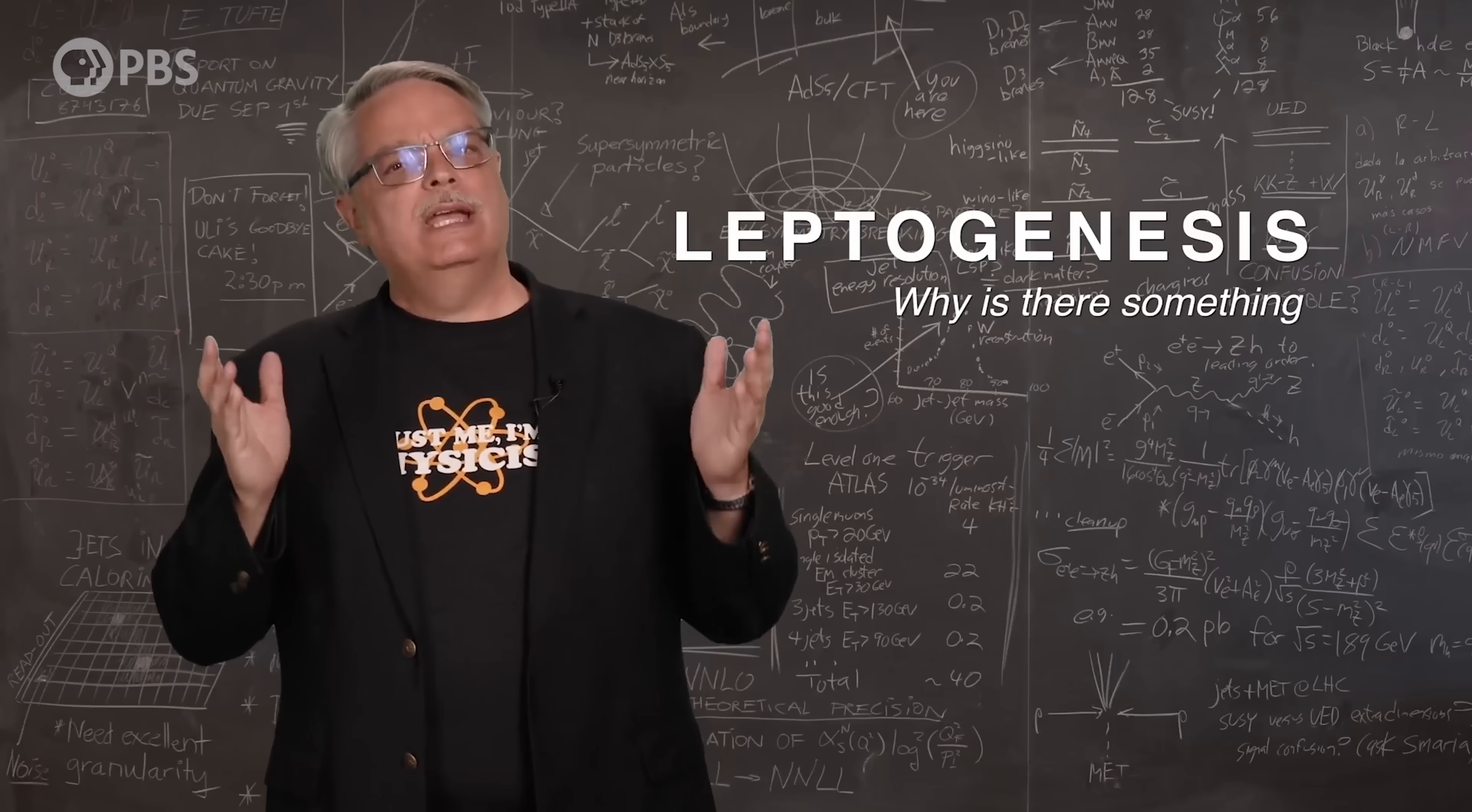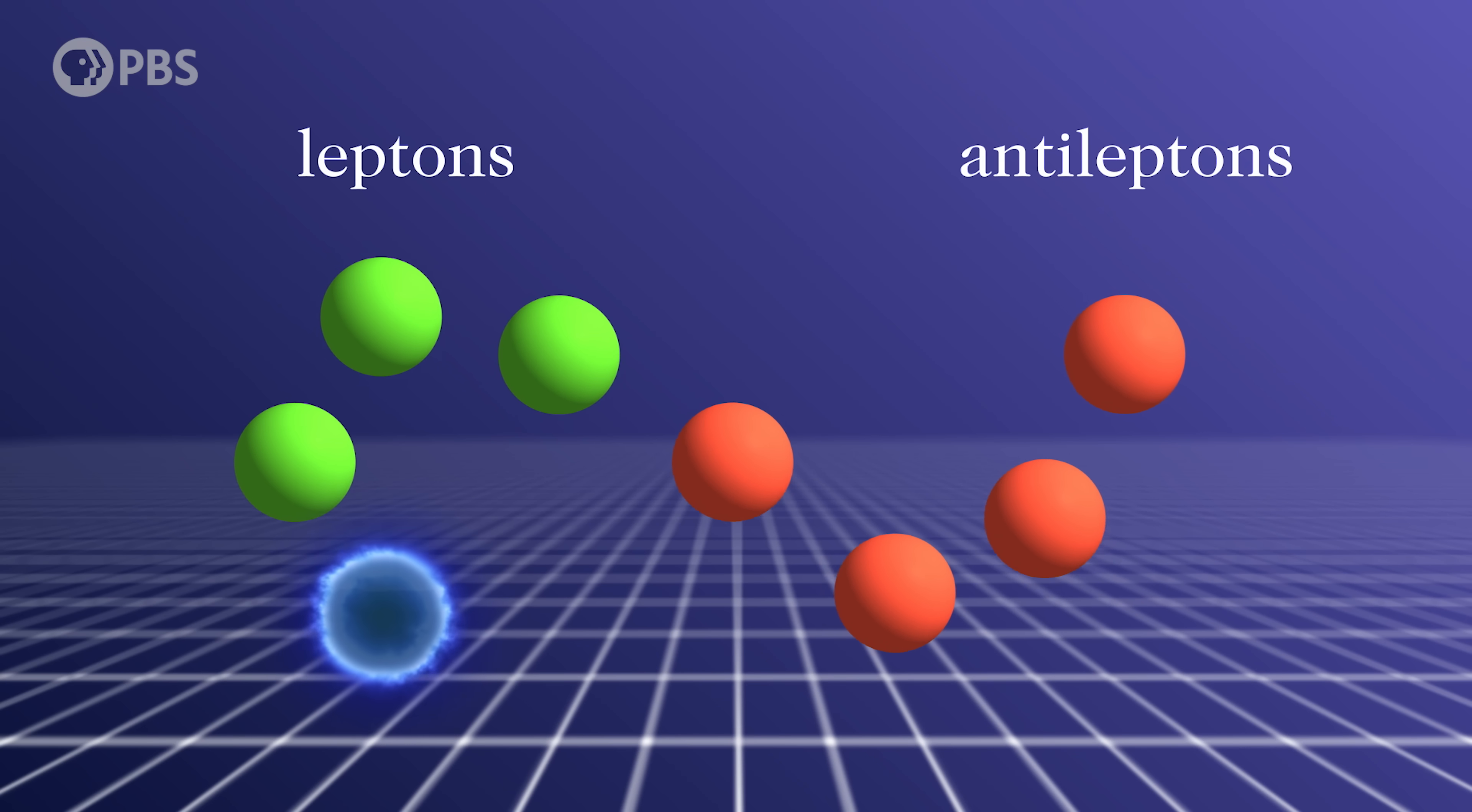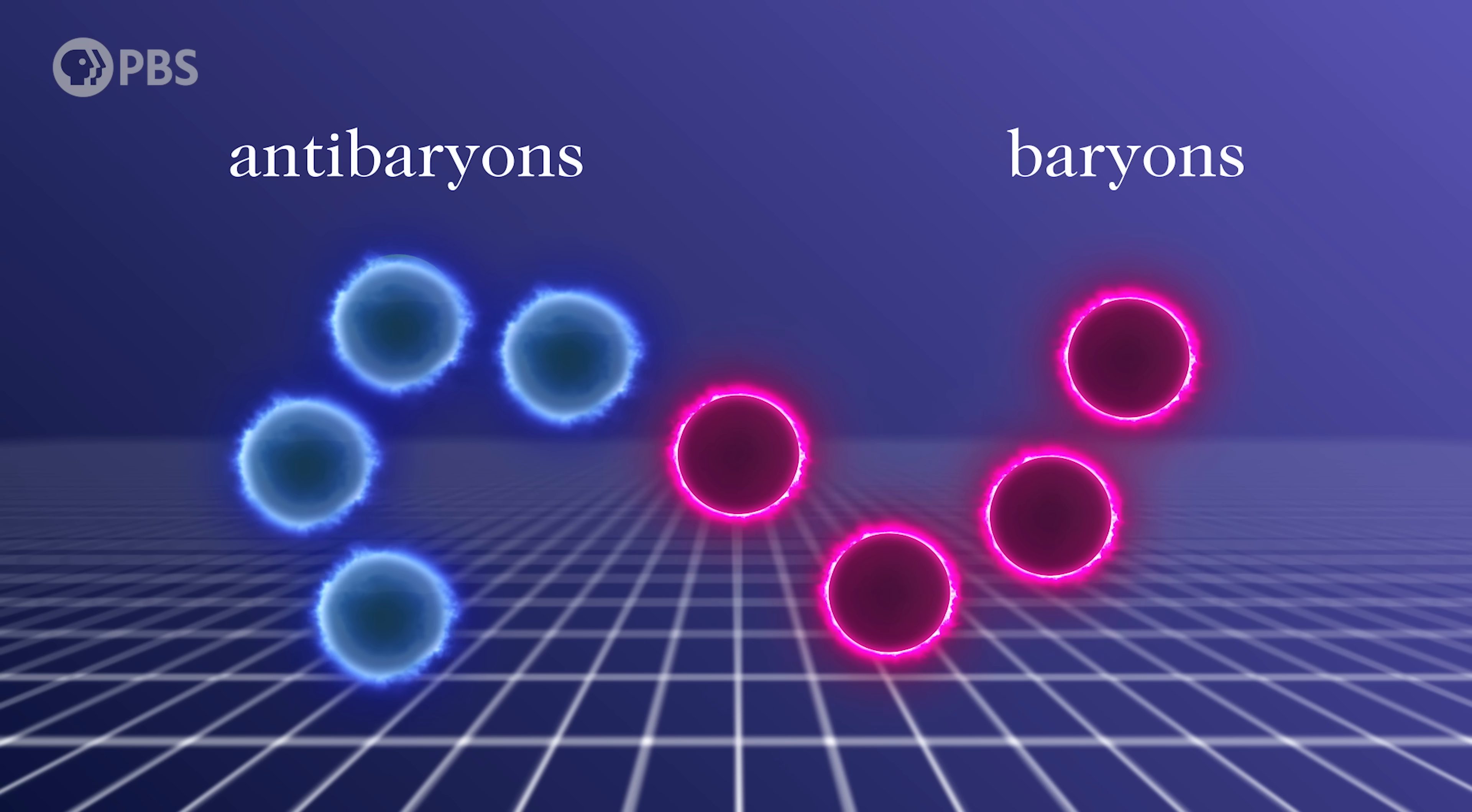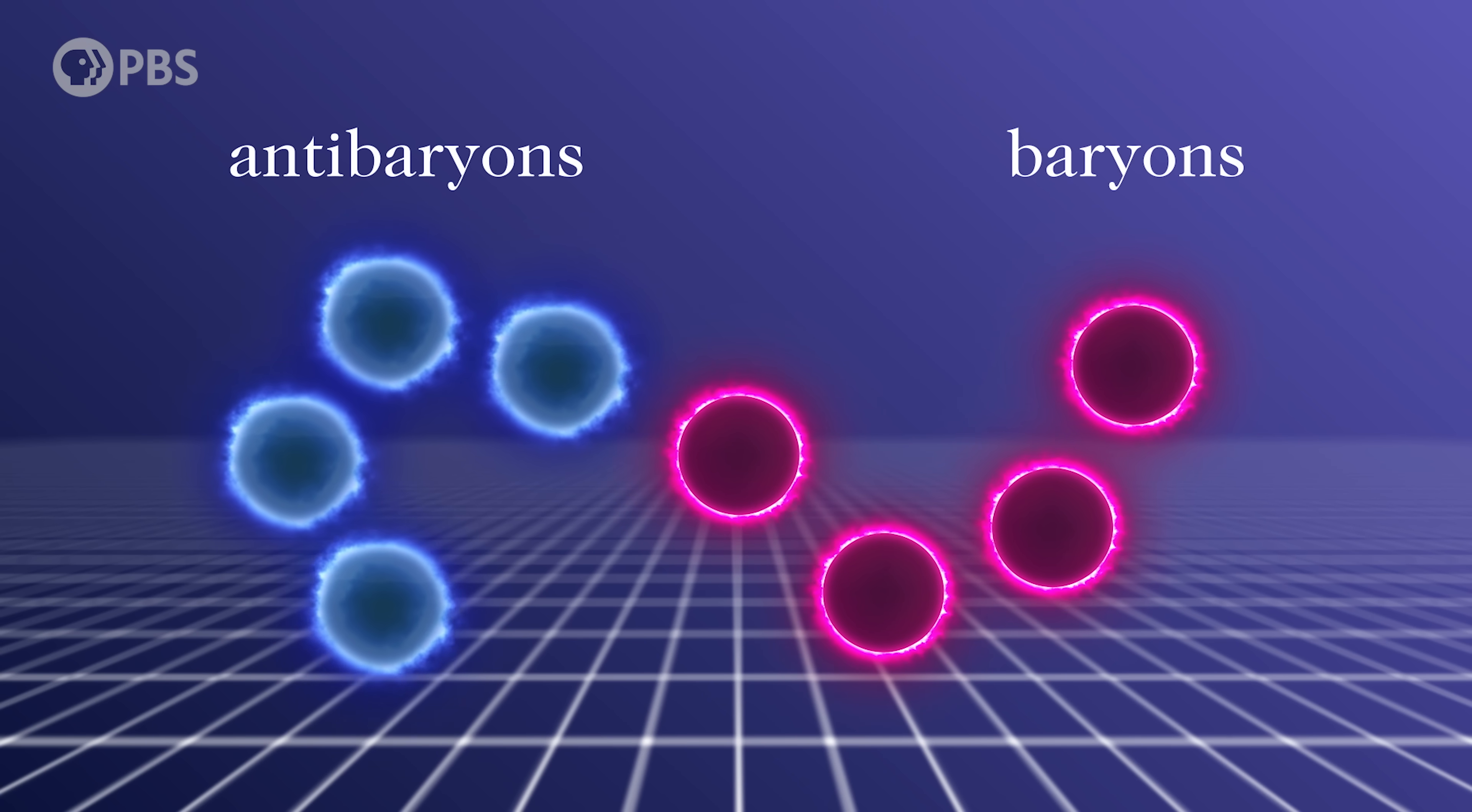And Don has already made an excellent video on the subject, which you should check out. But the short version is that, according to leptogenesis, neutrinos in the early universe may have decayed into other matter particles, with matter neutrinos producing antimatter particles, and antimatter neutrinos, or antineutrinos, producing matter particles.